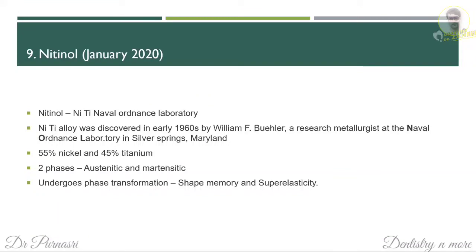The next question is nitinol. The full form is Nickel Titanium Naval Ordnance Laboratory. Nitinol was discovered in the 1960s by William Buehler, a research metallurgist at Naval Ordnance Laboratory — that is where the name came from. It has 55% nickel and 45% titanium. It exists in two phases: austenitic and martensitic. It undergoes phase transformation, which leads to its main important property — shape memory. Whenever it changes phase, there is a change in shape. Another important property is super elasticity.